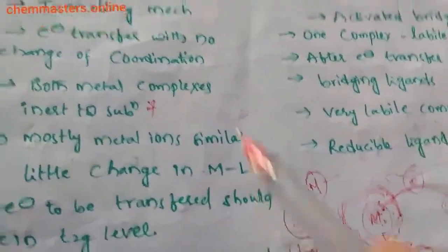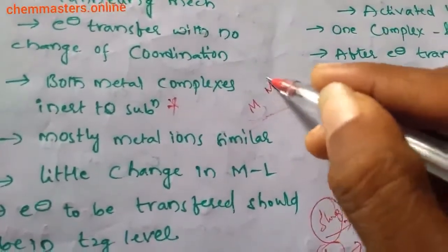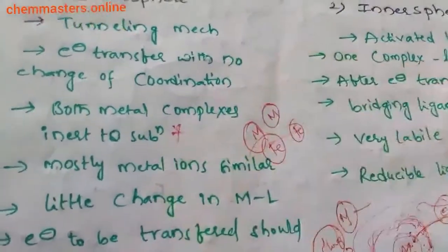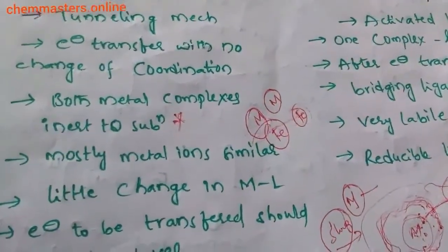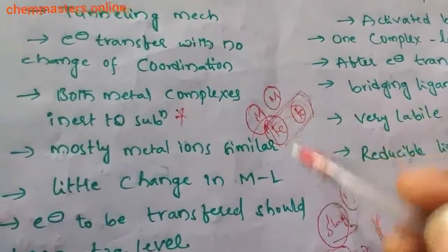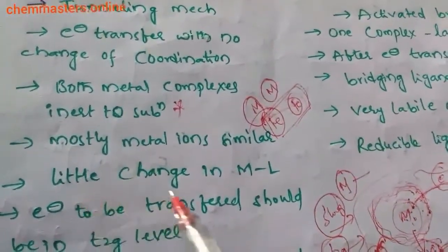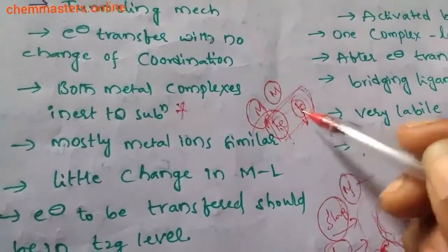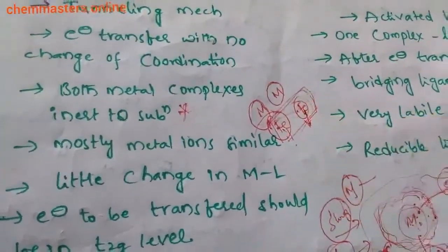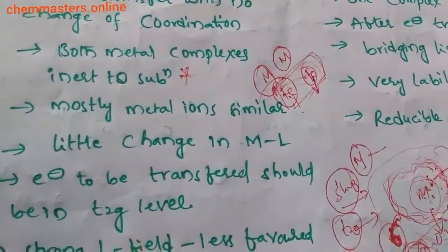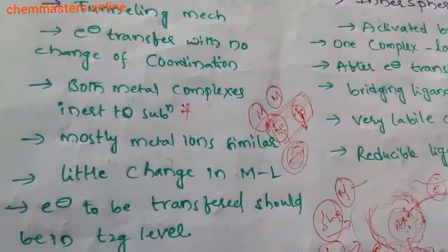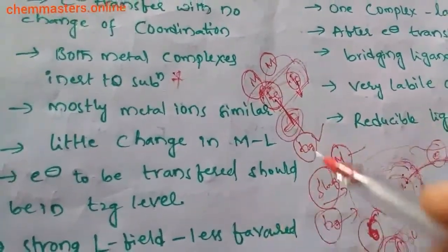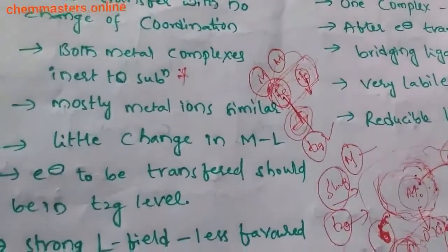In outer sphere mechanism, most metal ions involved are similar — for example, two iron complexes. If you find two similar metals in the reaction, that suggests outer sphere electron transfer. There may also be a little change in metal-ligand distances, which leads to electron transfer from one metal complex to another. Additionally, the electron to be transferred should be in the t2g level of the metal complex that is donating the electron.